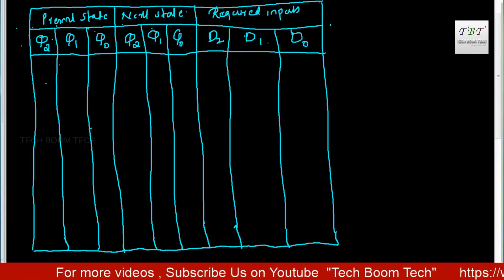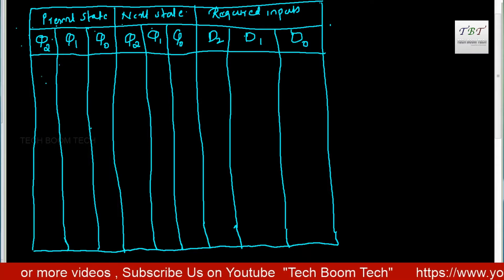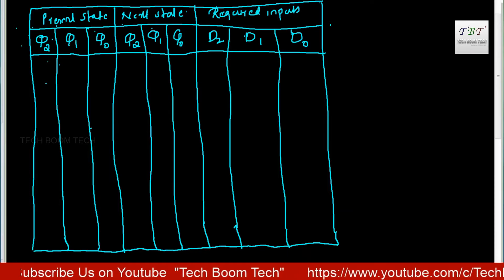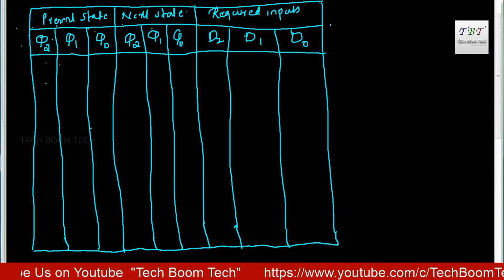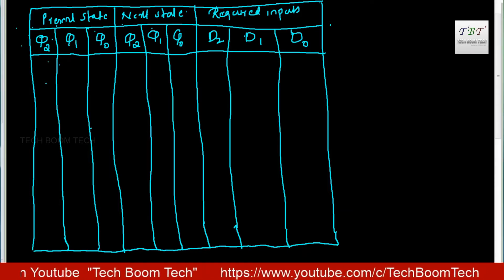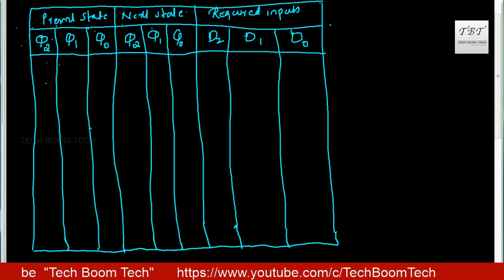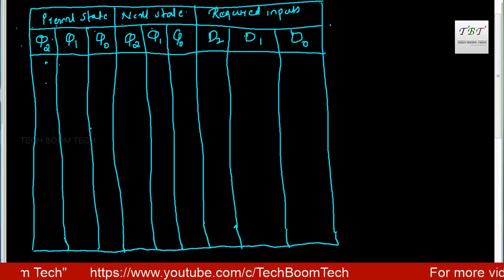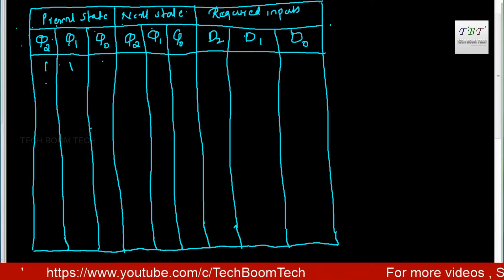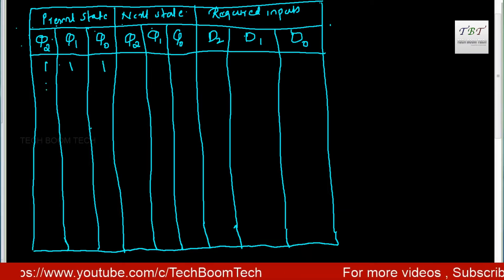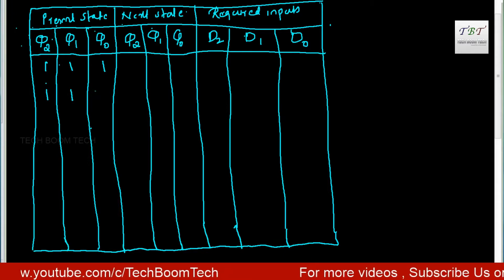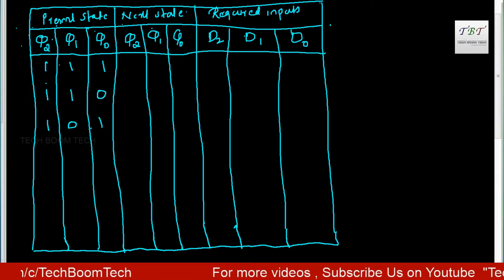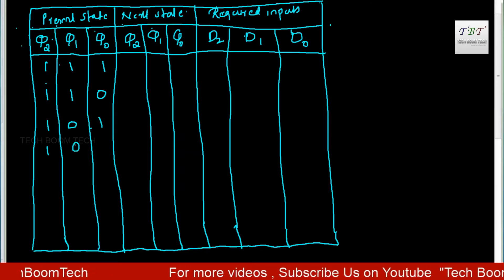We have to form the table. Next, we have to enter the counting state in the present state column. If you start with 000, follow the sequence: 111, then count down — 110, 101, 100.